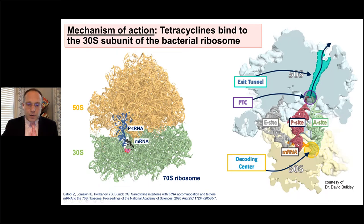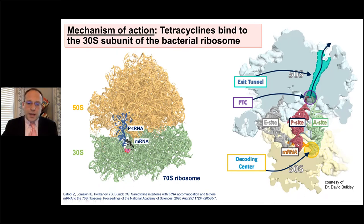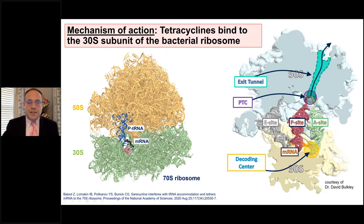The decoding center is very important because the A-site tRNA comes in and reads the messenger RNA codon, which tells it which amino acid to bring to the growing polypeptide chain at the peptidyl transferase center. The growing protein exits through the exit tunnel of the ribosome. As sequential amino acids are brought in, the tRNAs move from the A-site to the P-site and then through the exit site.